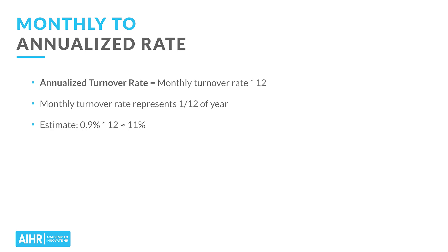Intuitively, you can see that if we lost 0.9% of our employees every month for an entire year, we should lose roughly 11% over the whole year. It's helpful to try to make these estimates in your head while calculating values formally — that will help you spot errors in your code, sharpen your mind, and develop intuitions about these values. Just asking yourself 'is this close to the value I expected?' really does wonders for your understanding and the quality of your code.